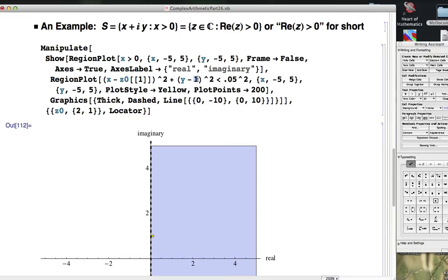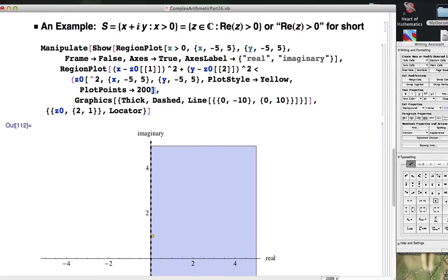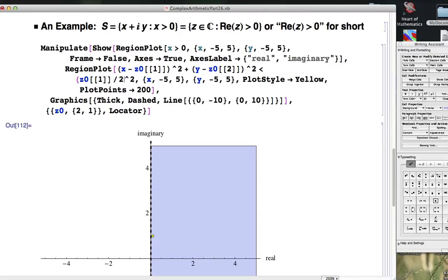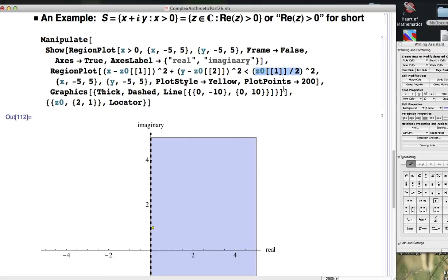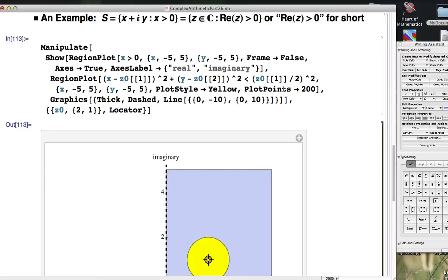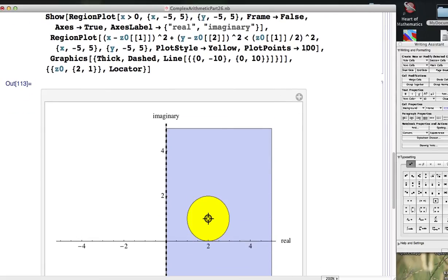And so our disk is going to be centered at, well, first of all, if I do this, that's the real part of z₀. And then if I change that 1 in there to a 2, that's the imaginary part of z₀. And as long as I'm, say, the real part over 2 away, this is half of the real part from, if I make that the radius of my disk, this should stay inside of the right half plane.